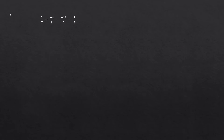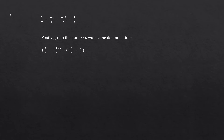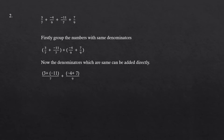Question number 2: 3 by 7 plus minus 4 by 9 plus minus 11 by 7 plus 7 by 9. First we will group the numbers with same denominators. Now we will consider terms in the bracket. Since the denominators are same, we will add the numerator keeping the denominators. Now we have 3 plus minus 11 whole divided by 7 plus minus 4 plus 7 whole divided by 9, which is equal to 3 minus 11 by 7 plus minus 4 plus 7 whole divided by 9. That is minus 8 by 7 plus 3 by 9. We can cancel 3 and 9 by dividing by 3. Now we have minus 8 by 7 plus 1 by 3.